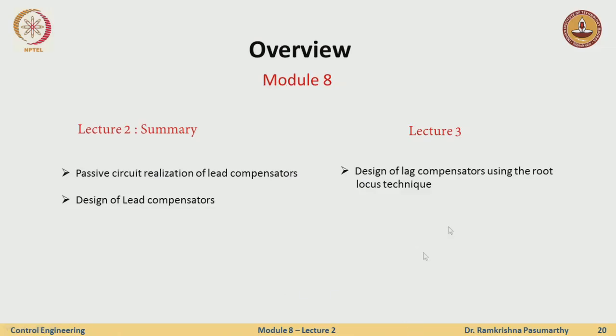Before finalizing the design we verify with simulations to check if all criteria are met. Starting with specifications of MP less than 10% and settling time less than 5 seconds, choosing the best alpha gives 11% MP and 4.38 seconds settling time — within acceptable limits. The design process is summarized as: find dominant poles, check the gain condition via root locus, consider a lead compensator and place poles/zeros, calculate gain K, check steady-state error constants, verify with simulations, and iterate if needed. In the next lecture we will see how to meet steady-state error specifications via a lag compensator. Thank you.